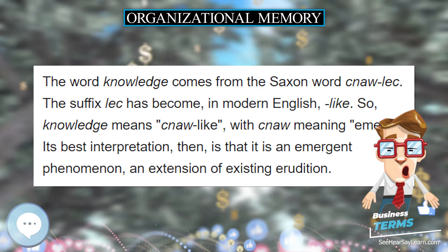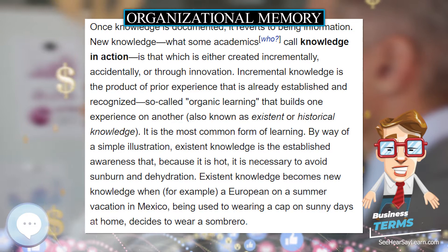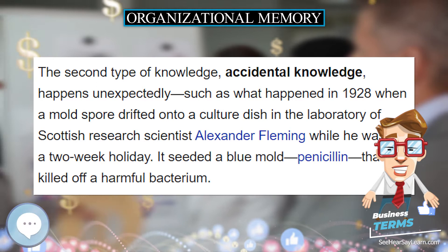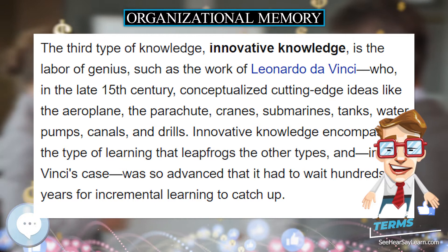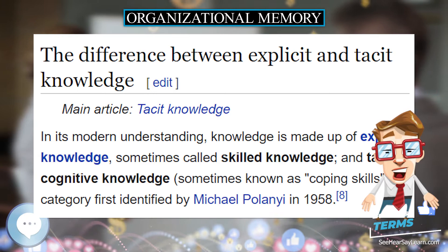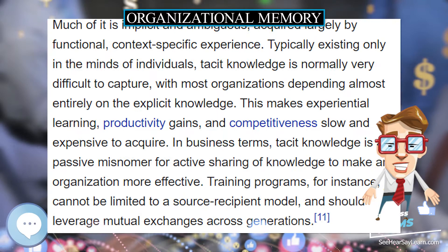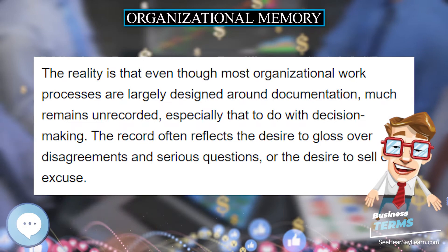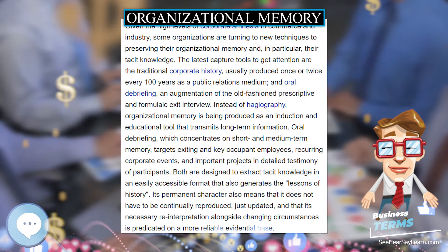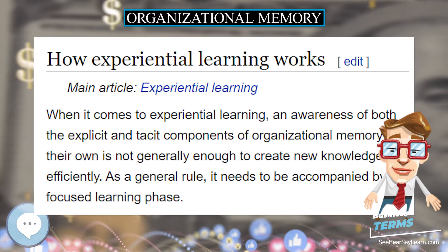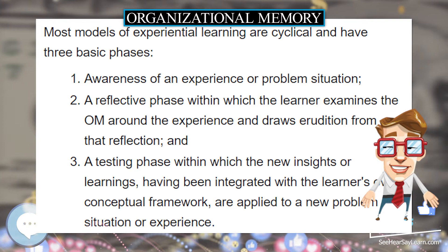In its modern understanding, knowledge is made up of explicit knowledge, sometimes called skilled knowledge, and tacit or cognitive knowledge, sometimes known as coping skills, a category first identified by Michael Polanyi in 1958. Explicit knowledge is the what of know-how — knowledge such as the professional or vocational skills that are recorded in manuals, textbooks, and training courses. Tacit knowledge, on the other hand, is the non-technical how of getting things done — what Edward de Bono, the inventor of lateral thinking, calls operacy, or the skill of action, and what Peter Drucker identifies in the use of the word techne, the Greek for skill. Much of it is implicit and ambiguous, acquired largely by functional, context-specific experience.